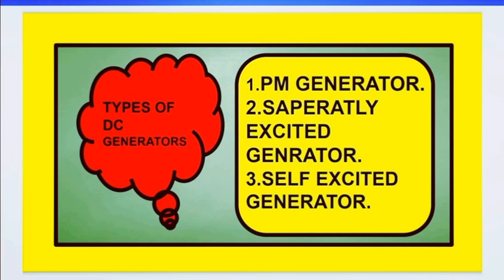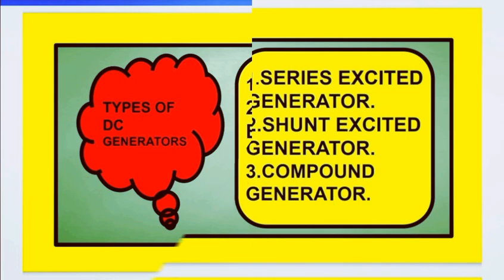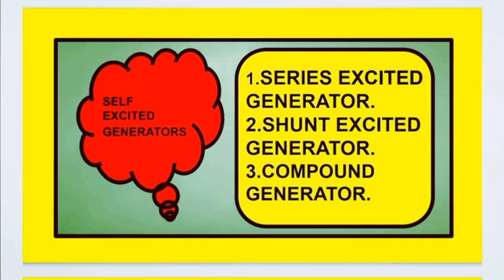Next, types of DC generators. Depending upon the excitation or field excitation, DC generators are divided into three types: permanent magnet DC generators, separately excited DC generators, and self-excited DC generators.